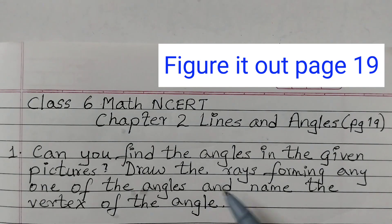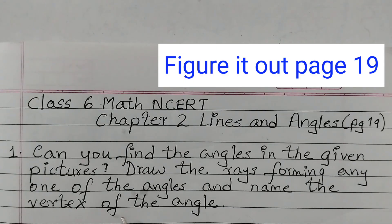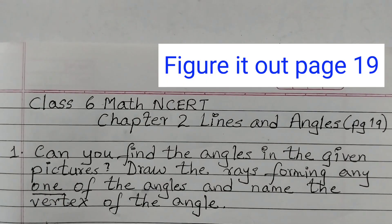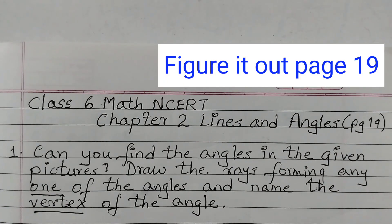The second part is to draw the rays forming any one of the angles, and then you need to name the vertex of the angle. For this you need to draw the 4 pictures in the notebook, or if a teacher is allowing you, you can do it in the textbook itself. Otherwise you need to draw the pictures in the notebook and then show the rays.